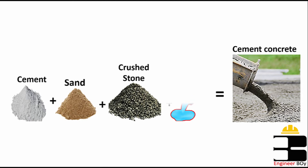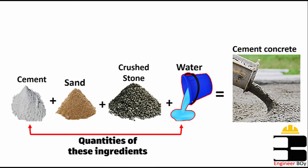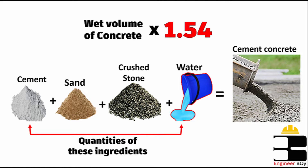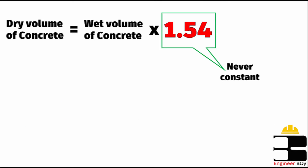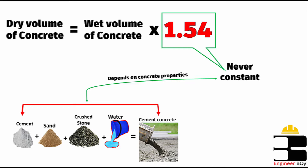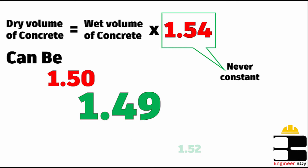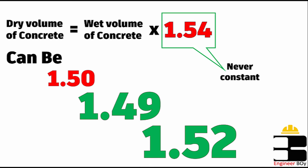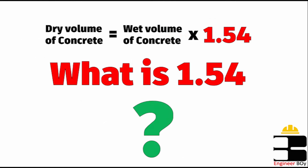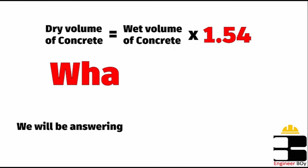Hey guys, you may have experienced that while we calculate different materials from concrete mass, we use 1.54 as a conversion factor to convert the wet volume of concrete into dry concrete mass. But remember, 1.54 is never constant — it can be different depending upon the properties of concrete and its ingredients, like 1.50, 1.549, 1.52, etc. So what exactly is 1.54? I'm Suleiman Khan and in this video we'll be learning the real meaning of 1.54 in concrete calculation.